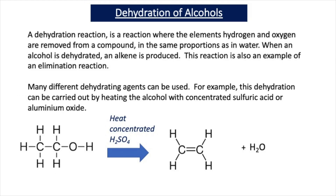Now let's move on to dehydration reactions. A dehydration reaction is one where the elements hydrogen and oxygen are removed from a compound in the same proportions as in water. When an alcohol is dehydrated, an alkene is produced. This reaction is also an example of an elimination reaction, because we start with a single reactant and form multiple products. An elimination reaction is the opposite of an addition reaction — in addition, multiple reactants join to form a single product.